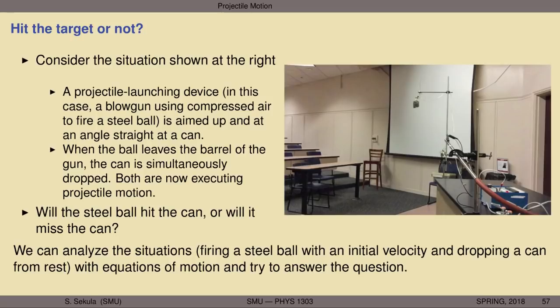We can analyze the situation — firing a steel ball with an initial velocity and dropping a can from rest simultaneously — using the equations of motion we have been developing, and try to answer this question. But before we do that in a mathematical sense, let's take a look experimentally at what would be required to set up exactly the situation I have just described.